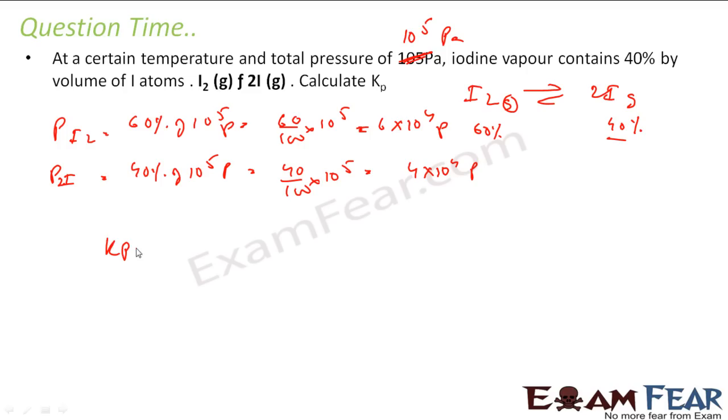Finding Kp is easy. Kp is what? Partial pressure of iodine to the power 2, because there are 2 here, by partial pressure of iodine gas. So partial pressure of iodine is what? 4 into 10 to the power 4, you square this.